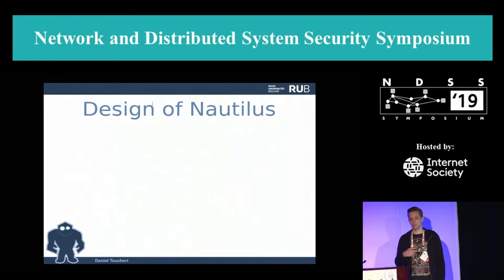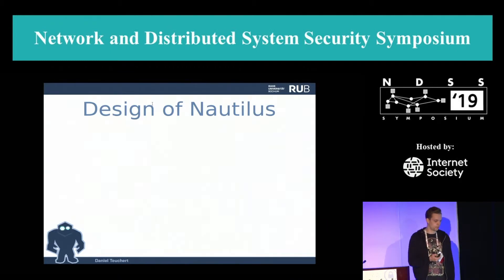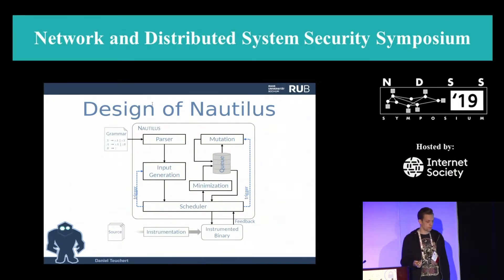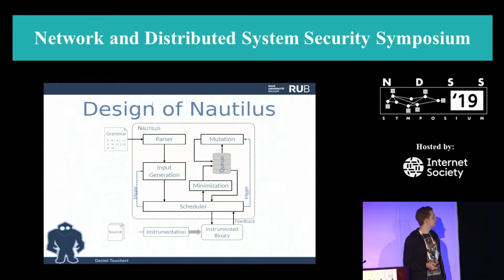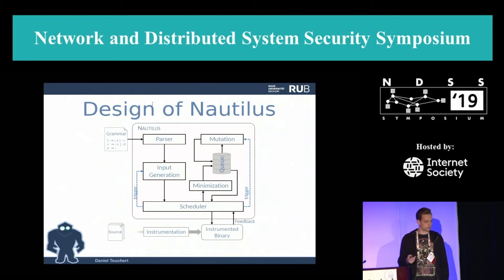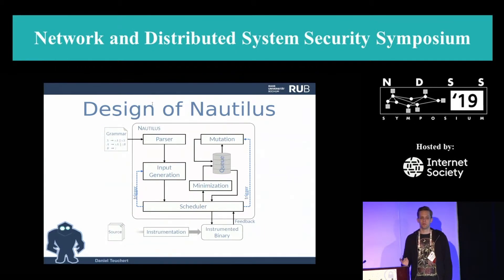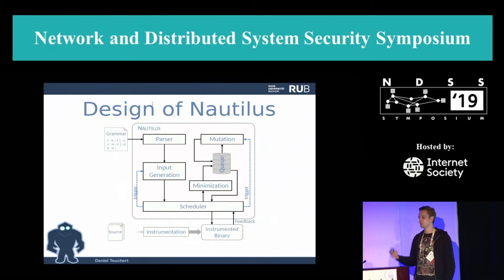Our fuzzer is completely based on using these trees. Unlike AFL, we do not store the inputs — we store the tree representation. We built a fuzzer implemented in Rust that uses the same instrumentation as AFL to get coverage feedback. It takes a grammar as input and uses it for fuzzing. Importantly, unlike most existing grammar fuzzers, we do not use seed files, because that requires the grammar to actually be able to parse those seed files.